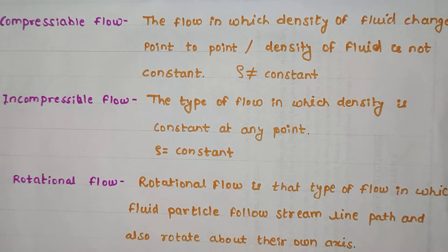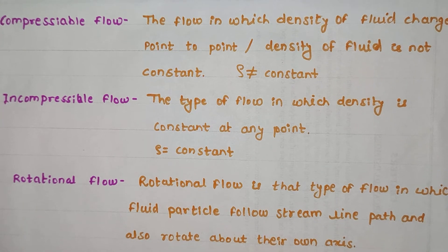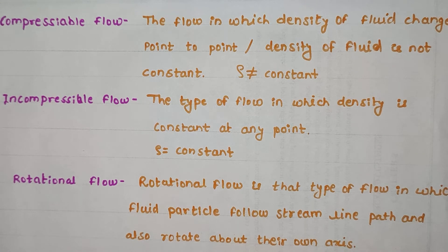The fourth type of flow is compressible flow and incompressible flow. Compressible flow is the flow in which the density of the fluid changes from point to point — the density is not constant along the fluid flow, represented as ρ ≠ constant. Incompressible flow is the flow in which the density of the fluid remains constant along the flow, represented as ρ = constant.